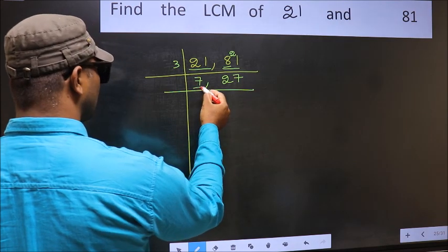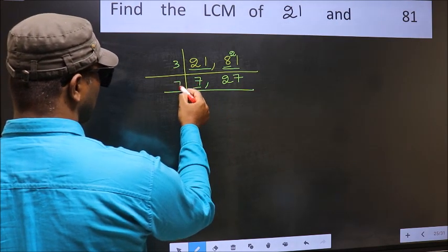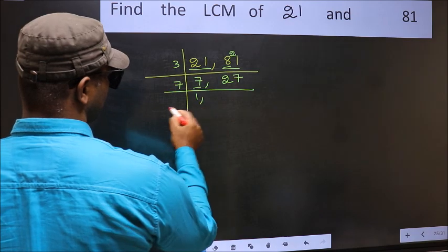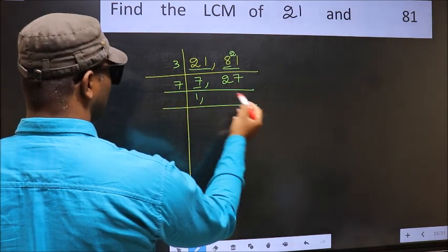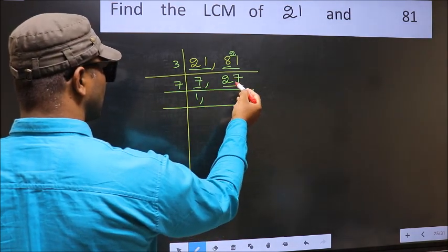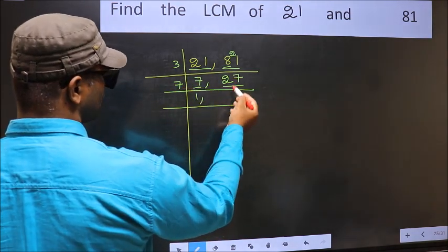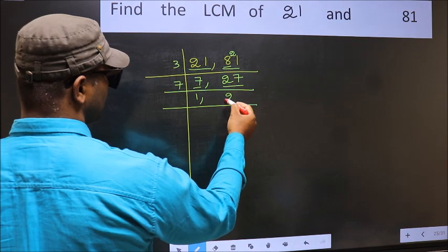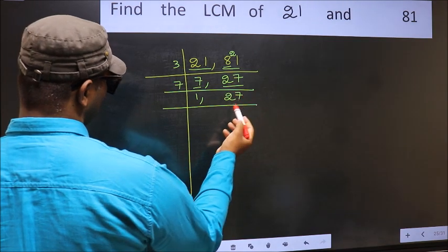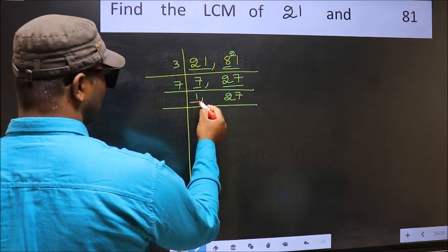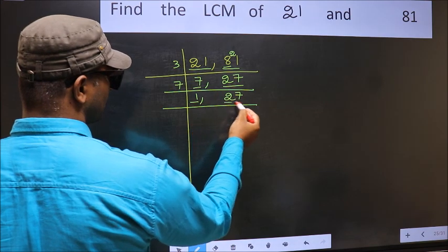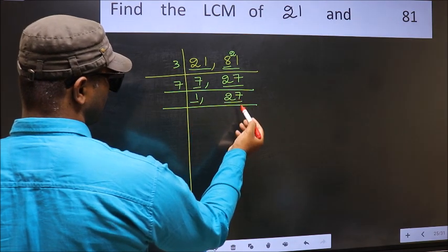Now here we have 7. Since 7 is a prime number, so 7 times 1 is 7. The other number, 27, is not divisible by 7, so you write it down as it is.